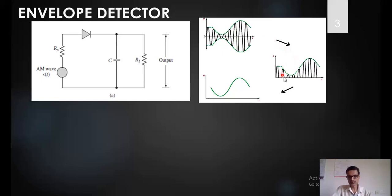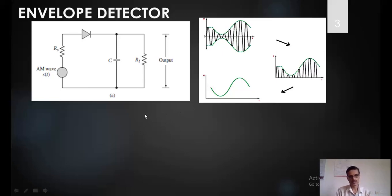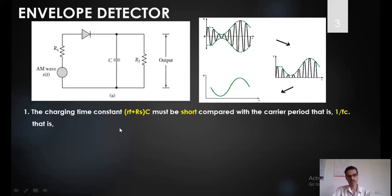The output of the diode gives only the positive half cycles. When there are only positive half cycles, the capacitor will charge and discharge. If the charging and discharging time is selected properly, I will get back the envelope of the message signal. Now, what is the time constant during the charging process and what is the time constant during the discharging process? What should be the value so that you get a perfect demodulated signal without any distortion?